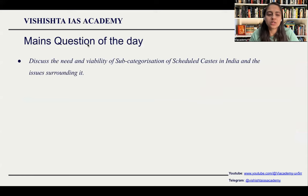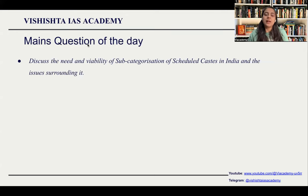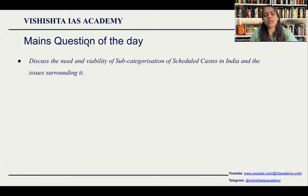These are the important news topics for today. Let's study the Mains question for the day: Discuss the need and viability of subcategorization of scheduled castes in India and the issues surrounding it. You need to first mention Article 341 in the introduction, then put down why there is a need for subcategorization with examples — mentioning the Madiga community. Then list the viability from legal and social perspectives, since caste census is a very contentious issue in India. List the problems and suggest a way forward, mentioning committee reports that have suggested subcategorization. This way you can make a wholesome answer.